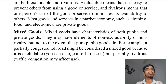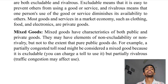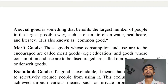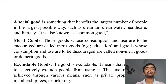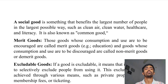A toll road is excludable — you can charge a toll to use it — but it is partially rivalrous. Social goods are something that benefit the largest number of people in the largest possible way.